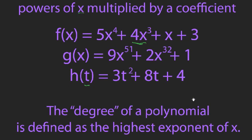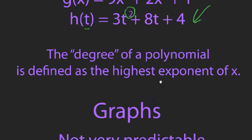You can classify polynomials by their degree. The degree is defined as the highest exponent of X. For f(x), the highest exponent is X to the fourth, so it's a degree 4 polynomial. G would be degree 51, and H would be degree 2 — you might recognize that as a quadratic equation. Quadratic equations are just degree 2 polynomials.